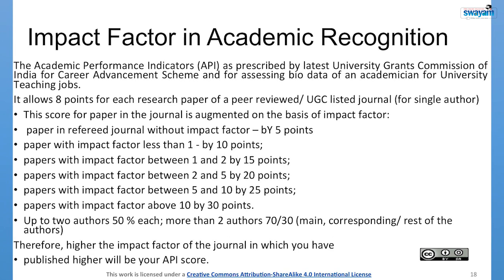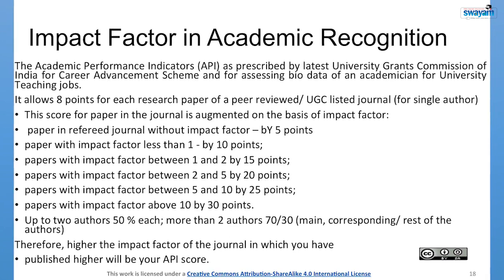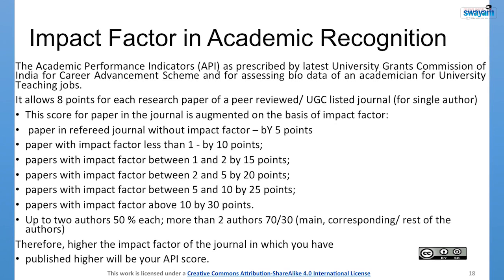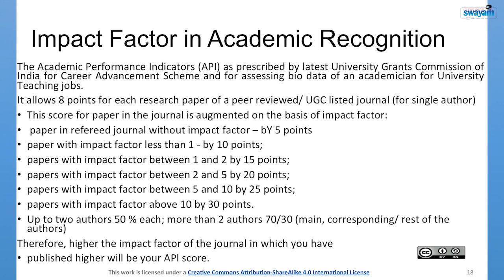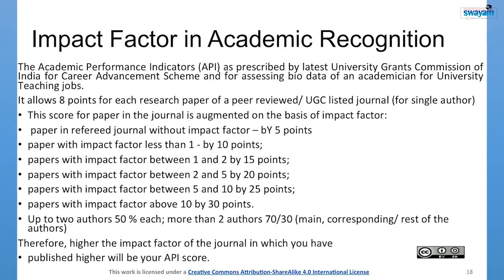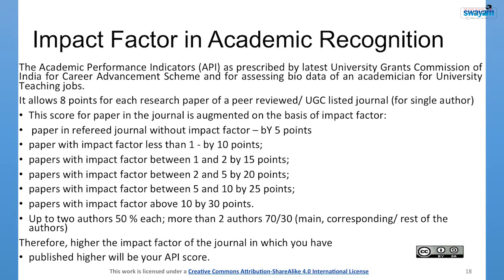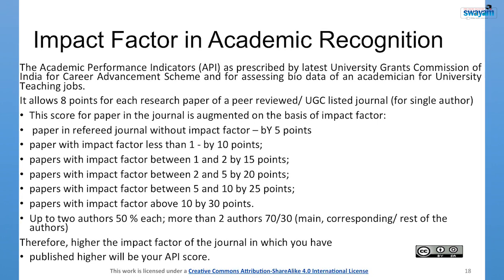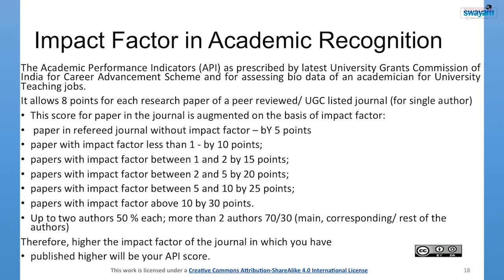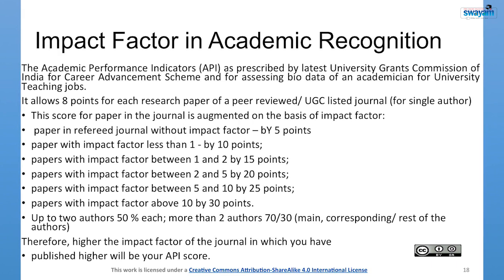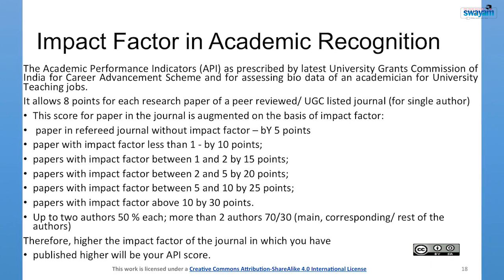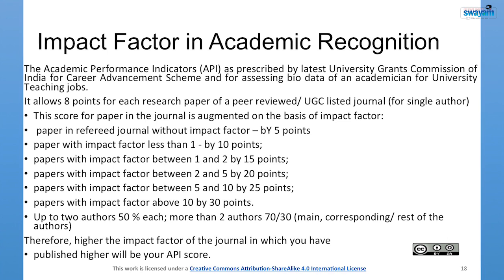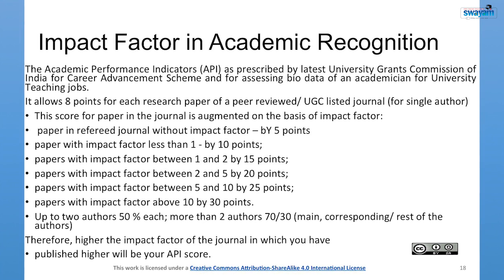The API scoring system works as follows: papers in refereed journals without impact factor get 5 points; with impact factor less than 1, 10 points; between 1 and 2, 15 points; between 2 and 5, 20 points; between 5 and 10, 25 points; and above 10, 30 points. For up to two authors, 50 percent each is given. For more than two authors, the main/corresponding author gets 70 percent and the rest share 30 percent. Therefore, the higher the impact factor of the journal, the higher your API score.